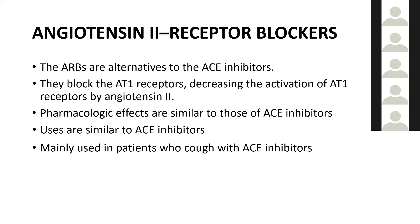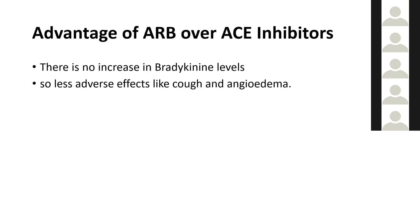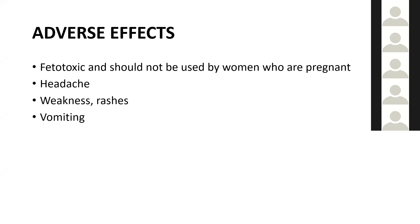ARBs — angiotensin 2 receptor blockers — are alternatives to ACE inhibitors. They block the AT1 receptor, decreasing activation by angiotensin 2, with pharmacological effects similar to ACE inhibitors. They are mainly used when patients develop a cough with ACE inhibitors. The key advantage is that ARBs do not increase bradykinin levels, so adverse effects like cough and angioedema are less common. Other adverse effects include fetotoxicity (avoid in pregnancy), headache, weakness, rashes, and vomiting.